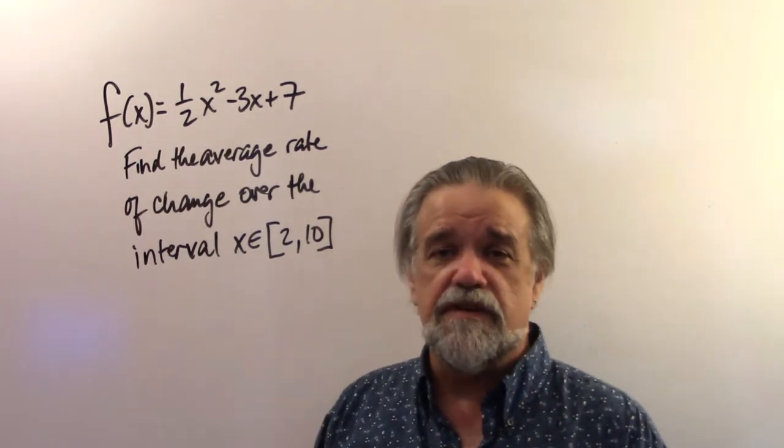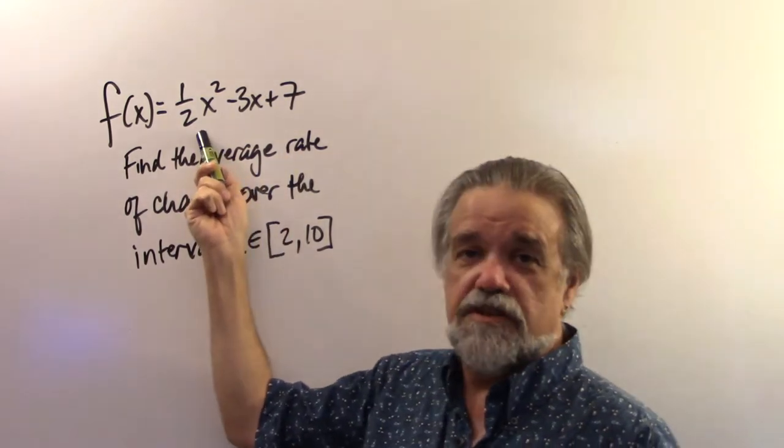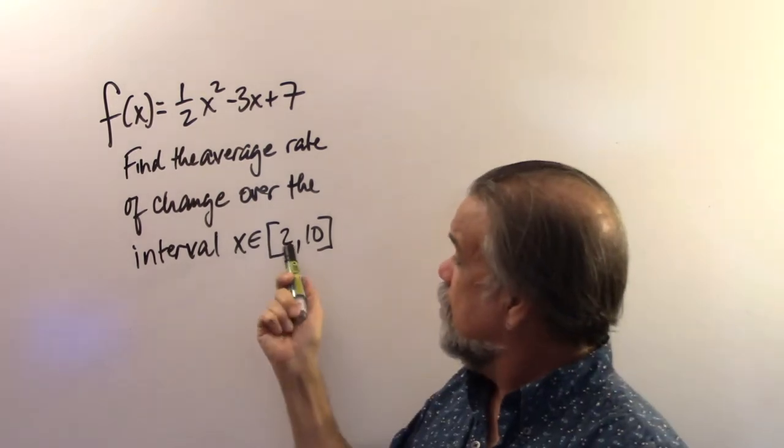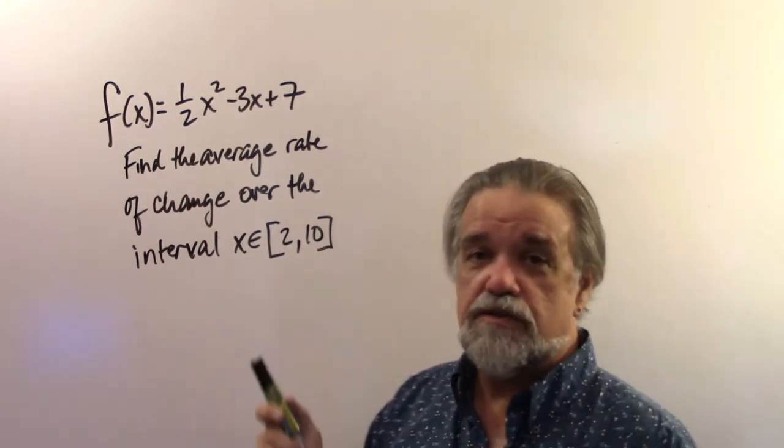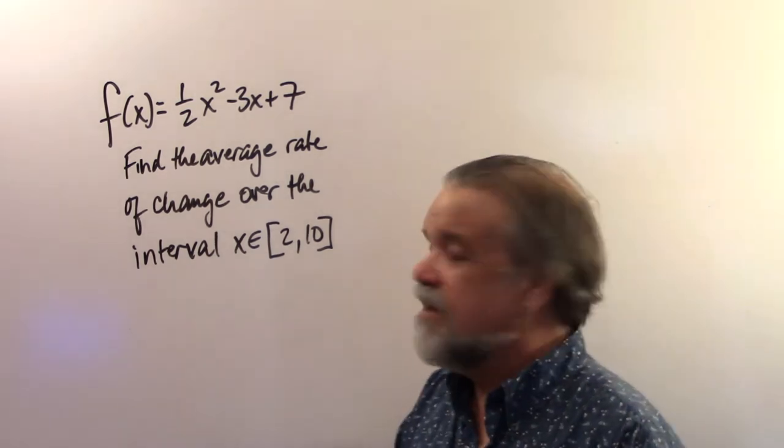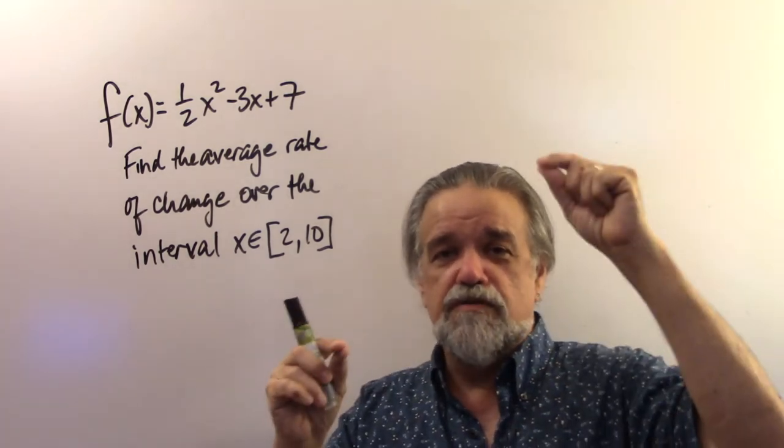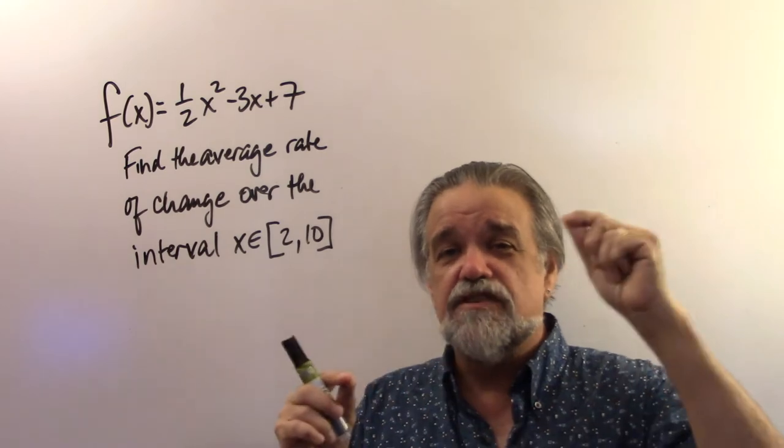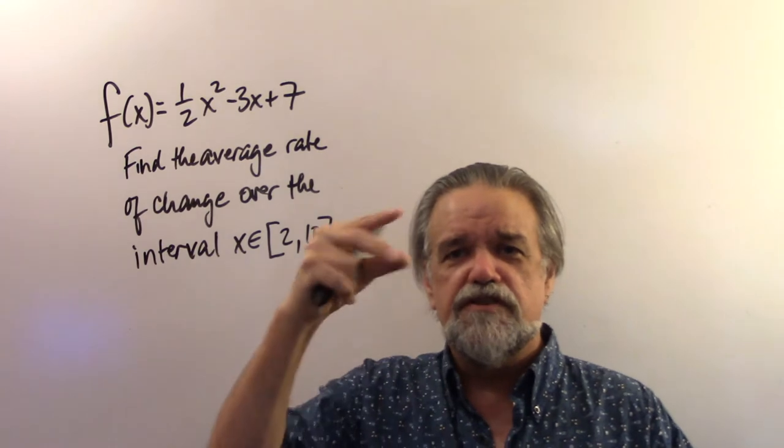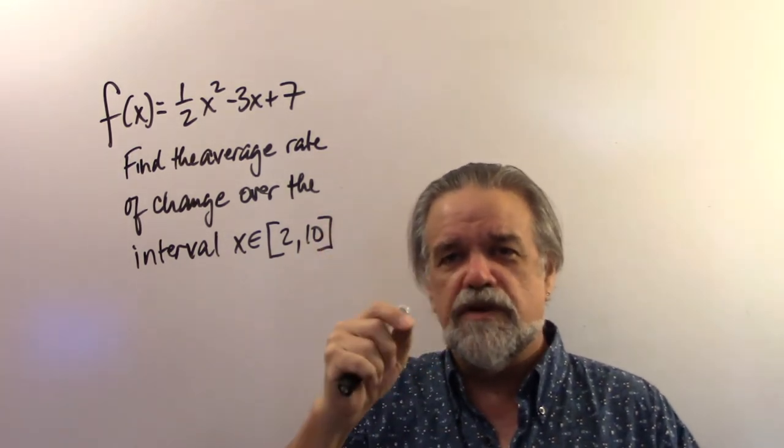We're going to do the exact same thing here. Even though the rate of change is constantly changing here, all we're worried about is the endpoints. And here we have the two x-coordinates of the endpoints. So this is what we're going to do. What we're going to do is we're going to find the slope of the line that goes through those two endpoints, and we're going to say that slope is the average rate of change. Slope is change in y divided by change in x. So that's y2 minus y1 over x2 minus x1.